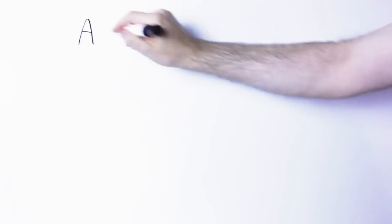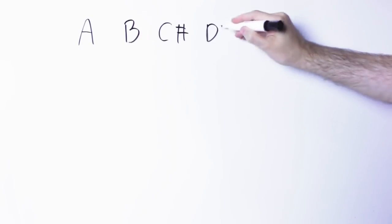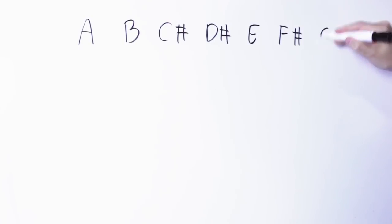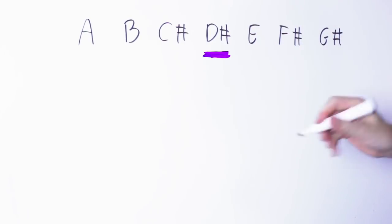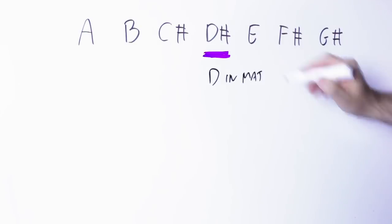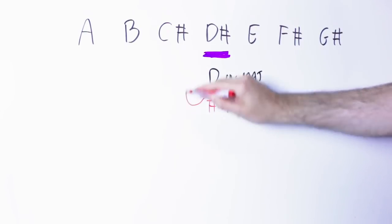Now the A Lydian scale: it's A, B, C sharp, D sharp, E, F sharp, G sharp. The only difference with a major scale, with an A major scale, is the fourth note. In an A major scale you will have a natural D, so here you have a sharp fourth note.